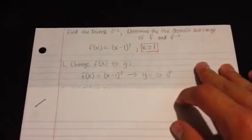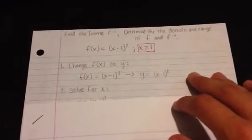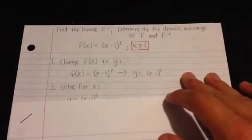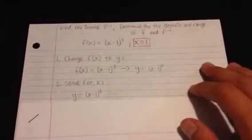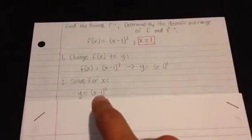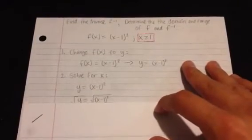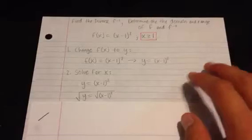Your second step is to solve for x, and you'll do that because you need to know what x equals to find the inverse. So, y is equal to x minus 1 squared. To solve for x I'll first need to take the square root of both sides.